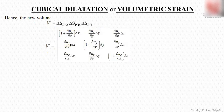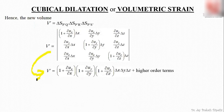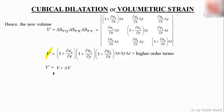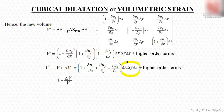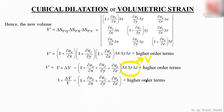Now let's simplify. V' equals this determinant already derived. When expanded, V' equals the product of the diagonal terms plus higher-order terms. Writing V' = V + δV, the right-hand side corresponds to the previous equation. Since δx·δy·δz denotes the initial volume, dividing the whole equation by V gives: 1 + δV/V = the expanded expression plus higher-order terms.